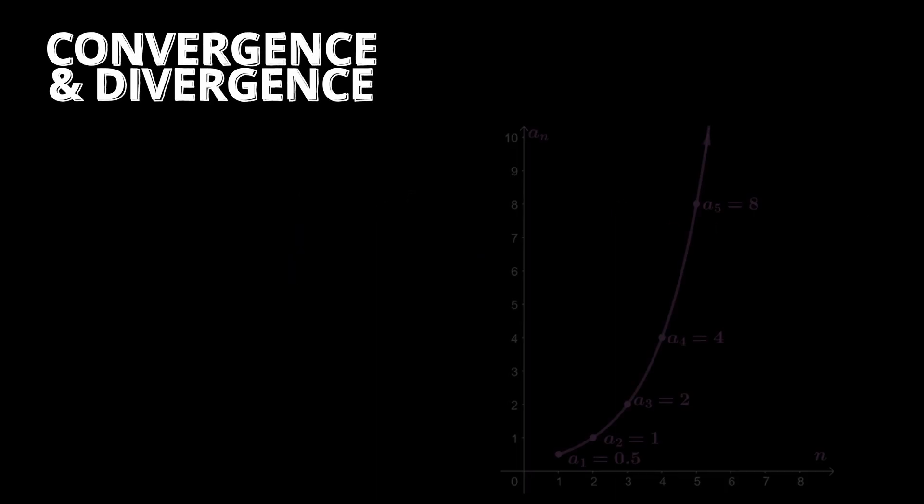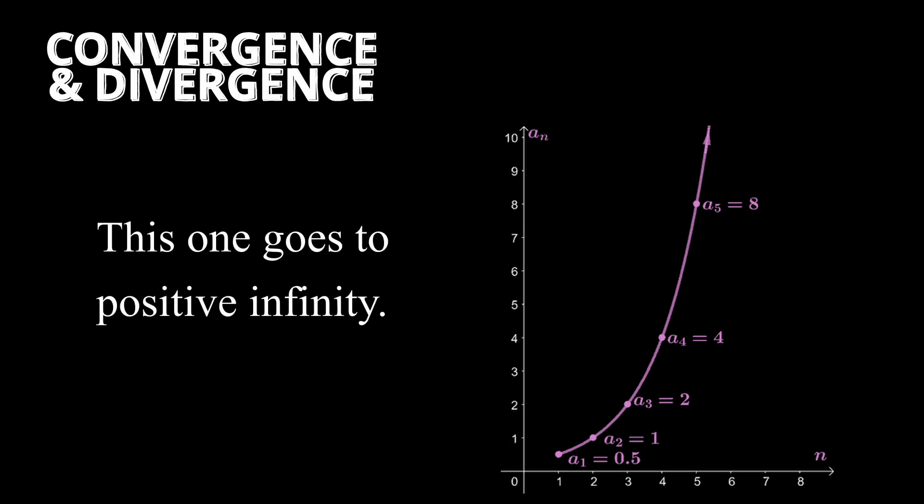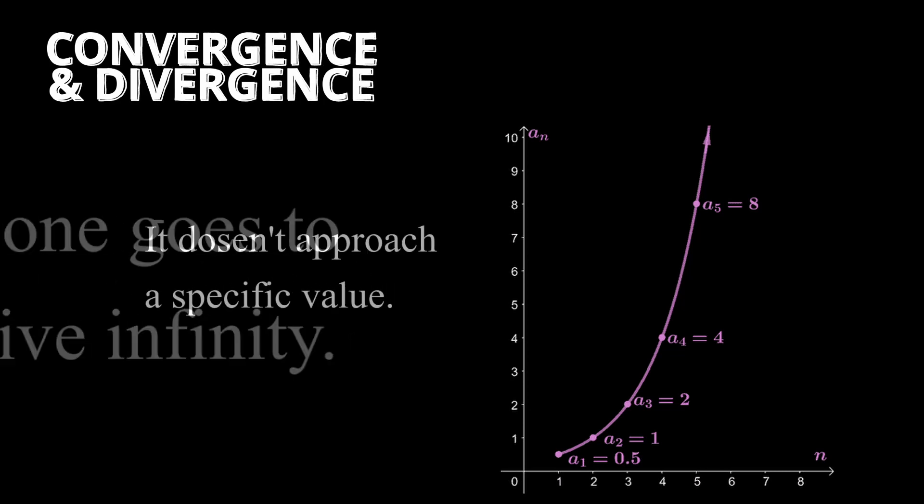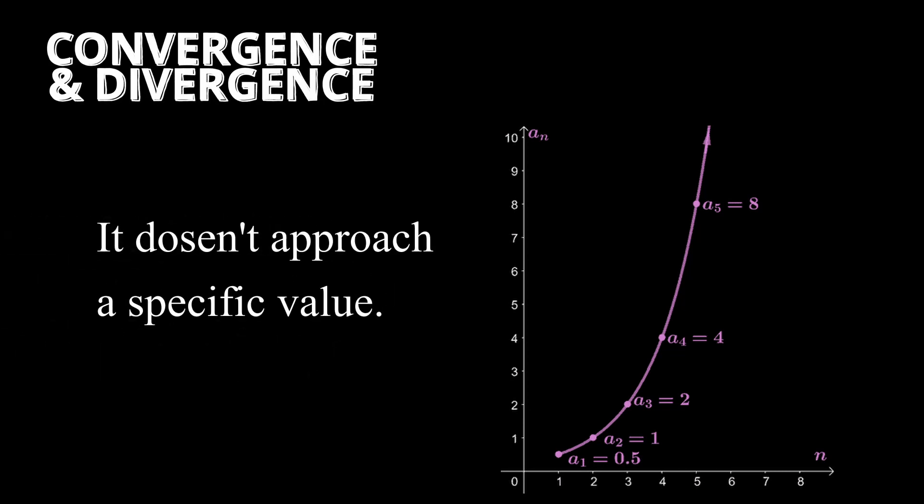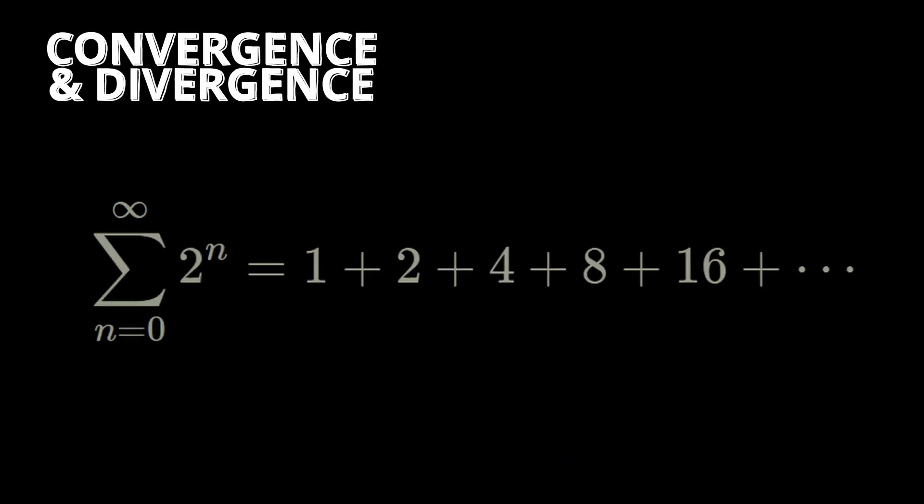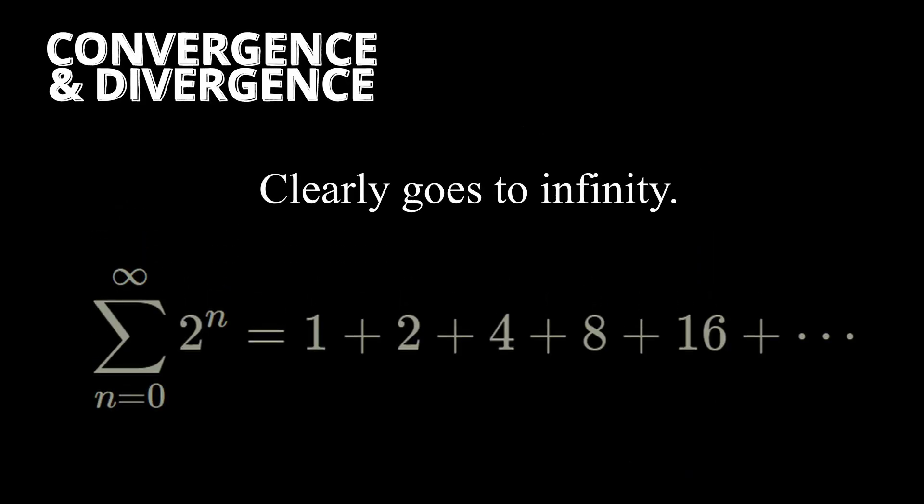Now, a divergent series' partial sums usually go to either negative or positive infinity, or they simply don't approach a specific value. For example, this series, when expanded, approaches positive infinity. Hence, we call it divergent.